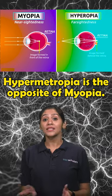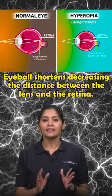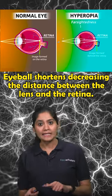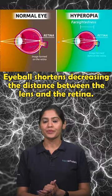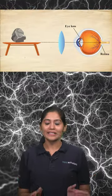Hypermetropia is the opposite of myopia, so the eyeball shortens, decreasing the distance between the lens and the retina. A convex lens, that is a converging lens, is used for correcting hypermetropia.